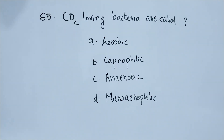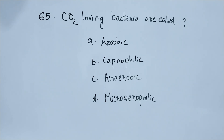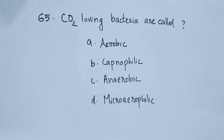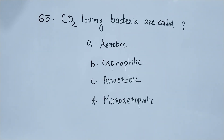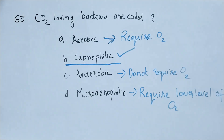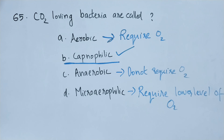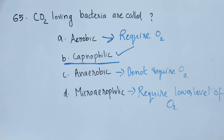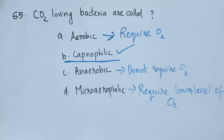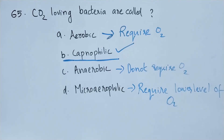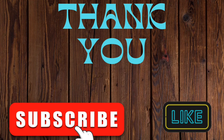Question number 65. Carbon dioxide loving bacteria are called: option A aerobic, option B capnophilic, option C anaerobic, option D micro aerophilic. The right answer is option B, capnophilic. Aerobic bacteria require oxygen, anaerobic bacteria do not require oxygen, and micro aerophilic bacteria require lower levels of oxygen for their growth. Today we are winding up. You can watch the previous videos from the playlist. If you are watching without subscribing, please do subscribe. Thank you.